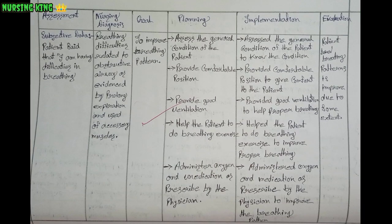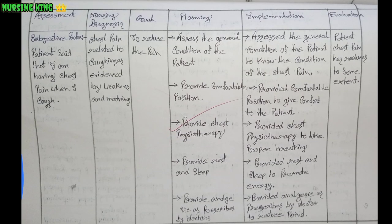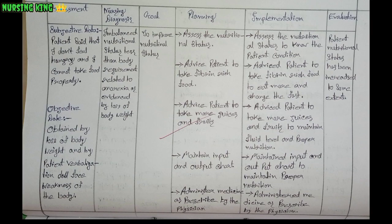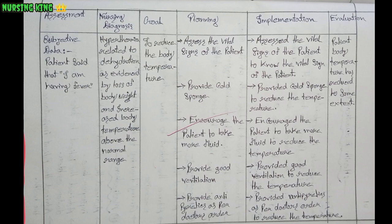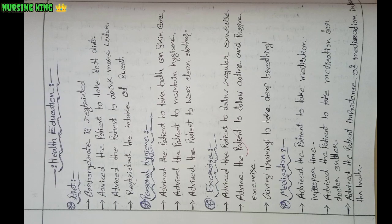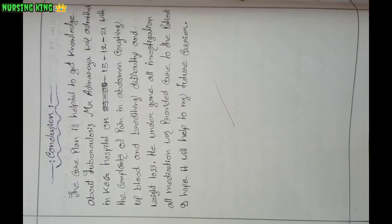For each nursing diagnosis, you have to write a nursing care plan. I am writing five care plans in total — care plan one, care plan two, care plan three, and so on. You can write four or three as you wish. After the care plans, write the health education section covering diet, personal hygiene, exercise, and medication.